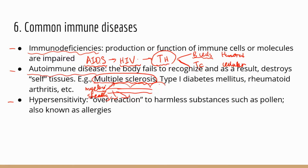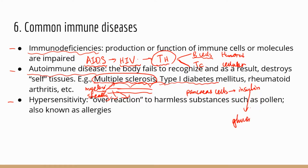The next autoimmune disease is type 1 diabetes. In this case, the beta cells in the pancreas that produce insulin are attacked by the immune system. Without those cells, your body has a very low level of insulin, and insulin is critical for glucose metabolism. Glucose is the fuel that our cells utilize for everyday functions.